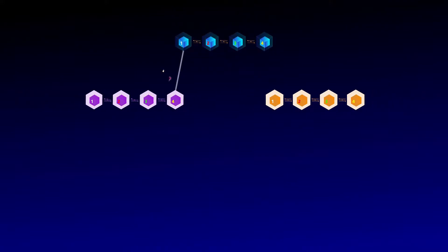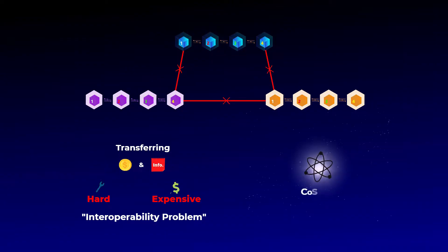One of the biggest problems in the crypto space right now is that separate blockchains can't communicate with each other. That makes transferring tokens and information between blockchains hard and expensive. This problem is known as the interoperability problem, and Cosmos is one of the most important projects that are trying to solve this problem.